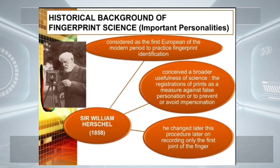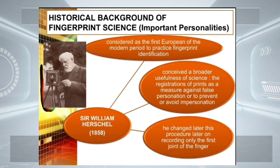He is considered as the first European of the modern period to practice fingerprint identification. He conceived a broader usefulness of the science, which is the registration of prints as a measure against false personation or to prevent impersonation. He changed his procedure later on, recording only the first joint of the finger — in other words, he initially used palm prints and then later only the first joint of the finger.